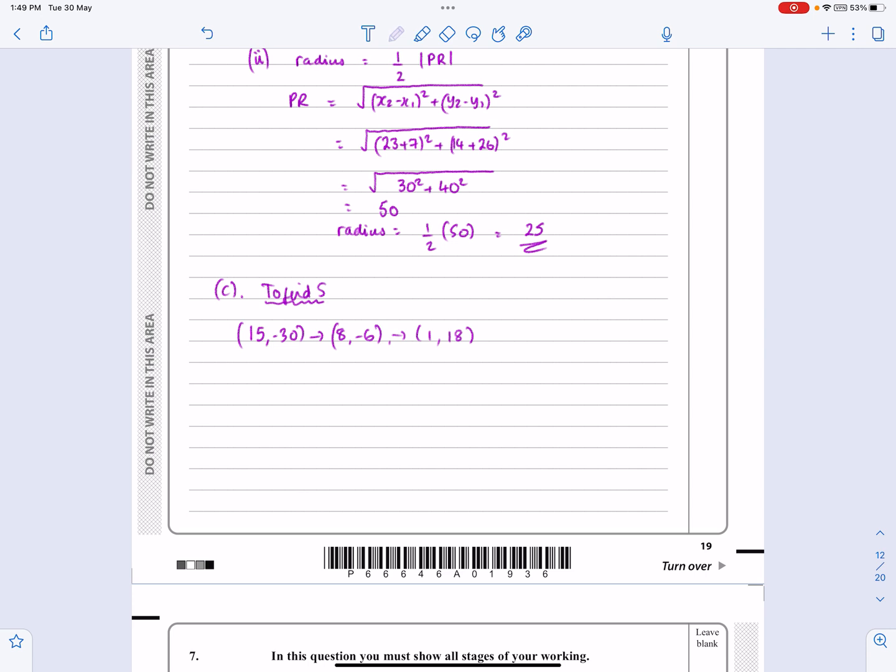So for the gradient of SQ, again, it's Y2 minus Y1 over X2 minus X1. It's going to work out to be 18 minus minus 30, 18 plus 30, over 1 minus 15. That's going to work out to be minus 48 over minus 14, which is minus 24 over 7.